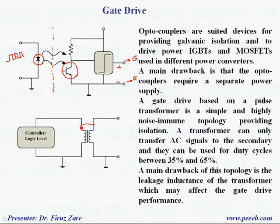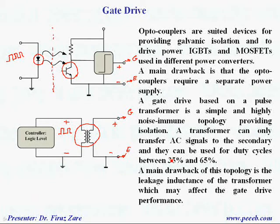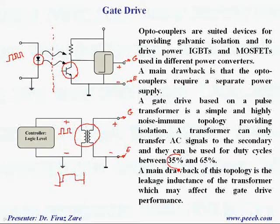The second method is using a pulse transformer. Basically, using a pulse transformer we can provide the gate signal again — we get the pulse pattern from the controller and get the gate signal from here. We connect one terminal to the gate and the other terminal to the emitter. However, a drawback is that the duty cycle — the time the switch is on versus off — must be controlled. The maximum duty cycle the system can handle is between 35% and 65%. Also, the leakage inductance of the transformer, which cannot be ideal, may affect the switching speed.